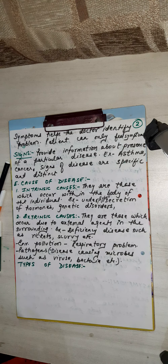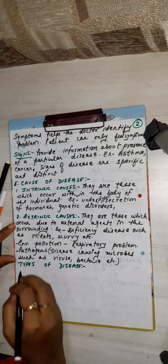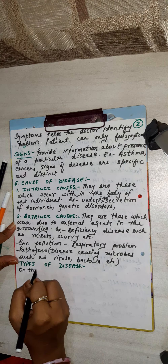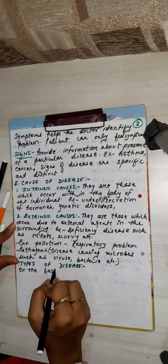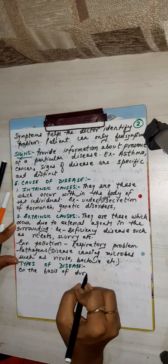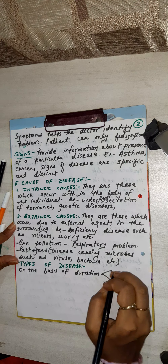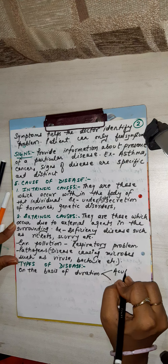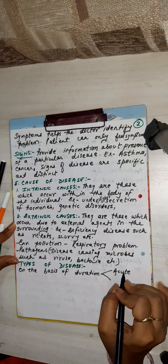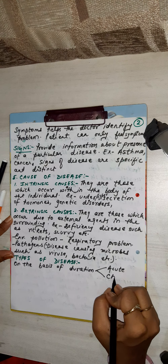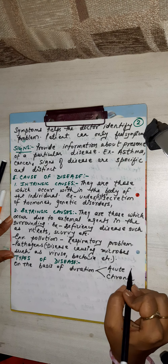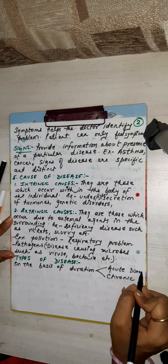On the basis of duration, disease is of two types: acute disease and chronic disease. First, we will discuss acute disease.